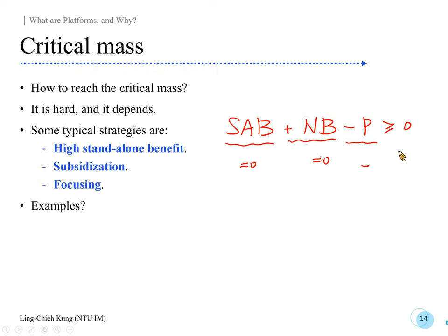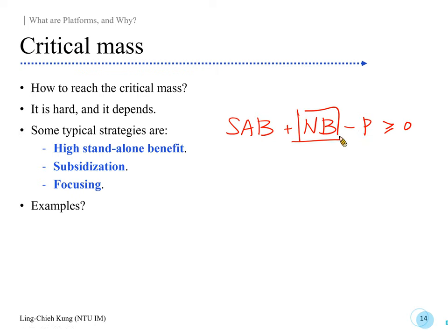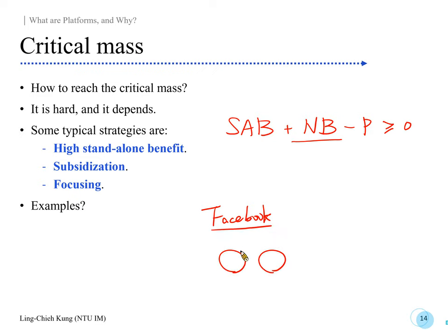The third strategy is focus. We typically want to create network benefits to attract consumers, but if at the beginning you open your service to everyone in the world, you lose focus and it's hard to acquire users or create positive network benefits. One example is Facebook — when Mark Zuckerberg created Facebook, the service was originally open only to Harvard students and Boston-area college students.